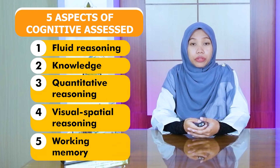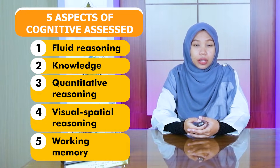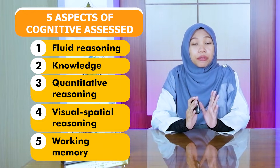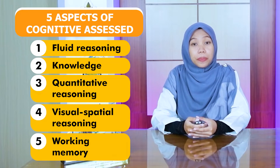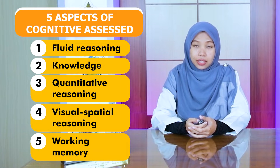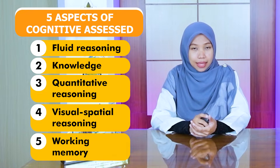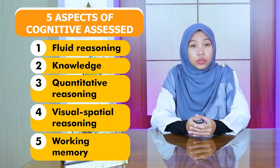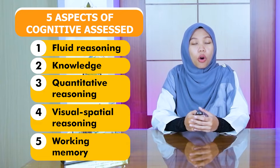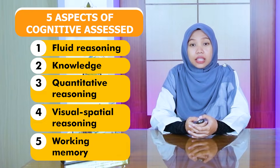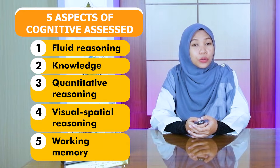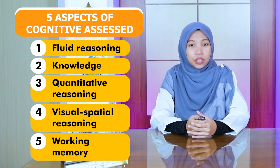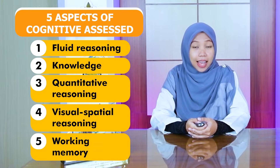The two broad aspects of intelligence assessed by the fifth edition of the Stanford-Binet are verbal intelligence and non-verbal intelligence. A general composite score is also obtained to reflect overall intelligence. The Stanford-Binet continues to be one of the most widely used tests to assess students' intelligence.